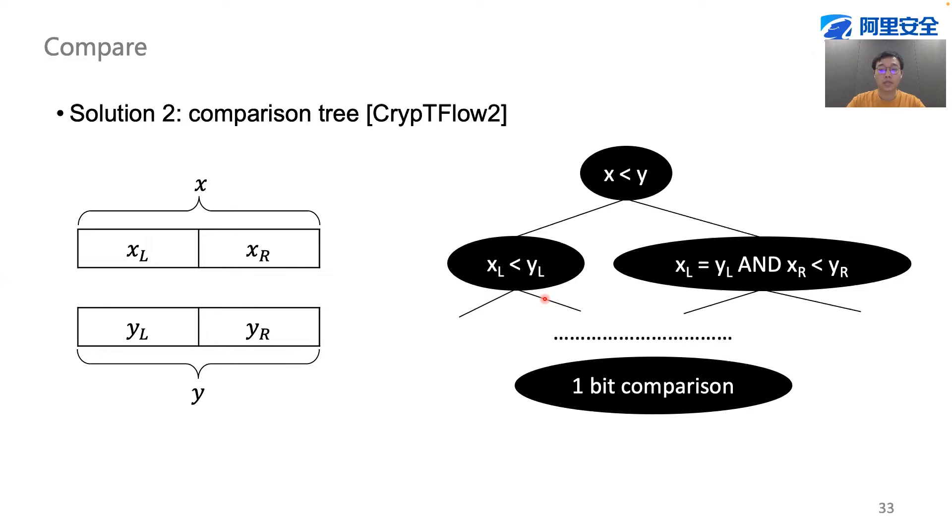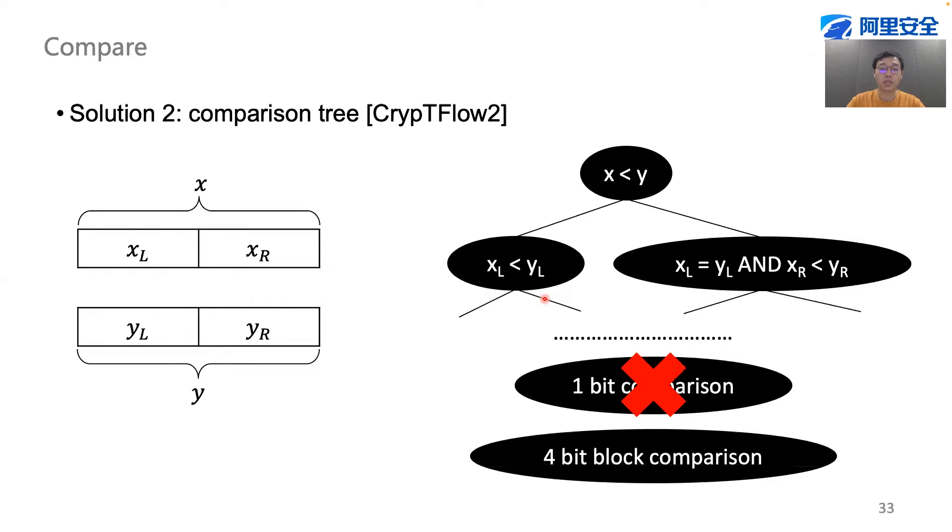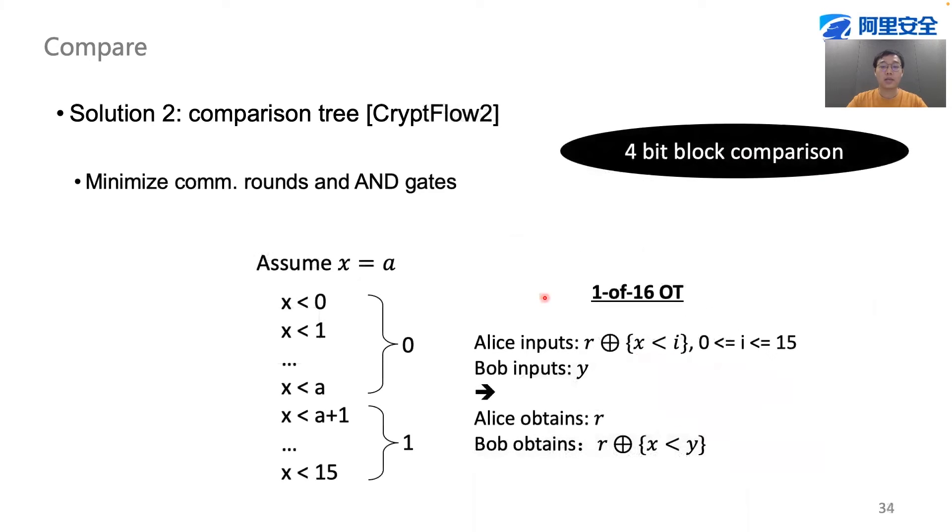CryptoFlow2 takes one step further, and the tree stops at four-bit blocks, for example, without going too deep into the tree. And this turns out to be more efficient if we implement the four-bit block comparison with one-out-of-16 OT. This minimizes both the communication rounds and the AND gates.